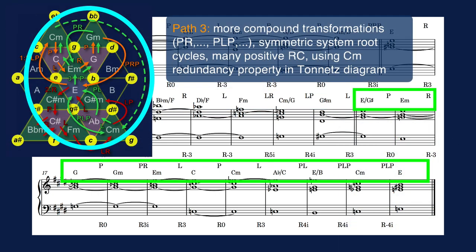The third path has a wider compass, achieved through more compound transformations. These lead to symmetric system root cycles. Note that most of these have positive value, yielding a somewhat stronger cadential feeling in this part of the progression. The dashed arrow demonstrates the redundancy property, the double occurrence of the C minor triad in the diagram.